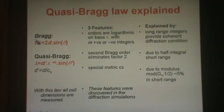Well, in the quasi-Bragg angle, the order N is logarithmic becomes tau to the minus M. Secondly, because of those half integral values at short range, the quasi-Bragg law is in second order Bragg. So the factor 2 cancels. And thirdly, because of those moduli, there's a special metric for the interplanar spacing. D' equals D over C_s. And we're going to see that in the simulation as well. And finally, the quasi-Bragg angle, theta prime, is different from the Bragg angle.